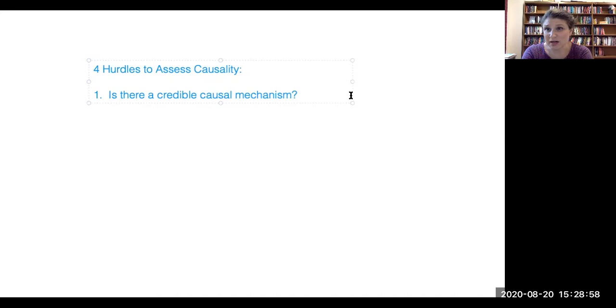But just to preview, this means: is there a reason we think that X and Y could be related to one another? Can you convince me that there might be some sort of pathway that would connect the two of them to each other?